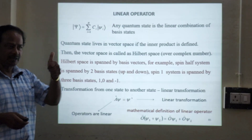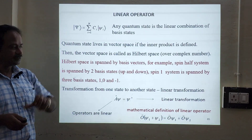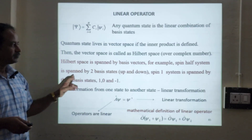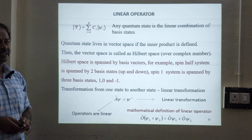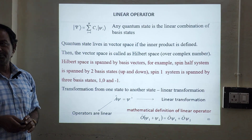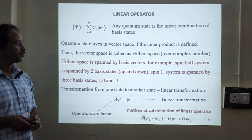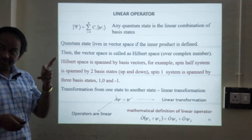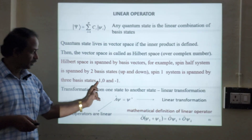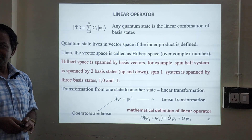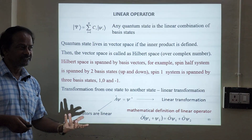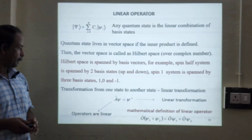Hilbert space is spanned by basis vectors. For example, a spin-half system is spanned by two basis states: one is up, another one is down. A spin-1 system — for example, just take a photon — is spanned by three basis states: 1, 0, minus 1. So they are all basis vectors.